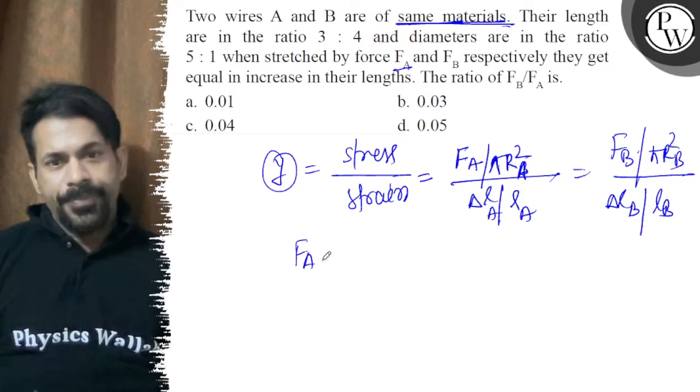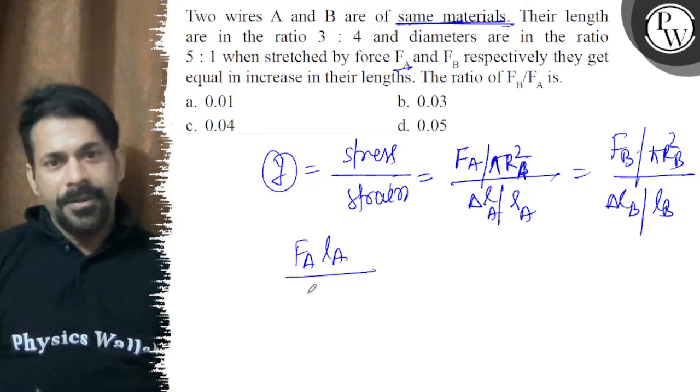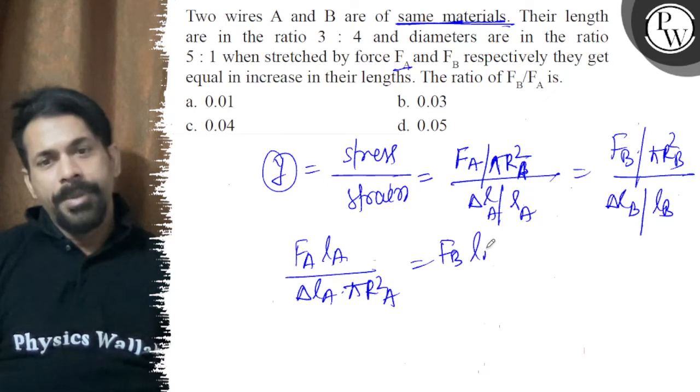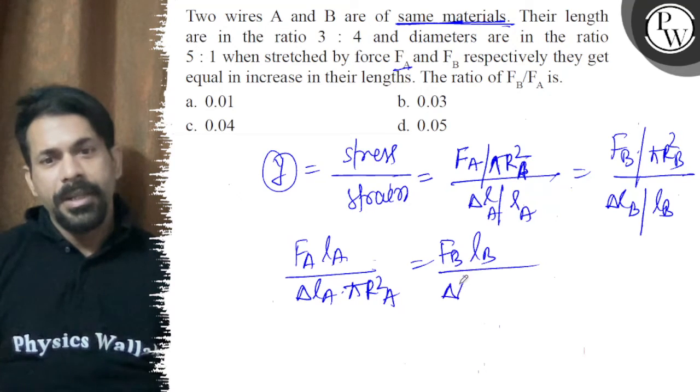So FA into LA divided by del LA into pi R square of A is equal to FB LB over del LB into pi R square of B.